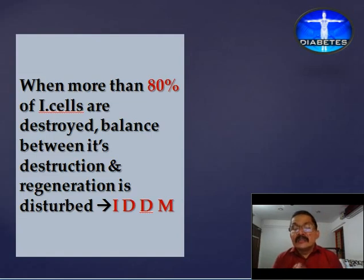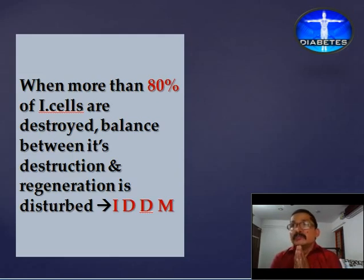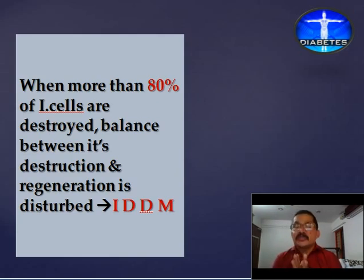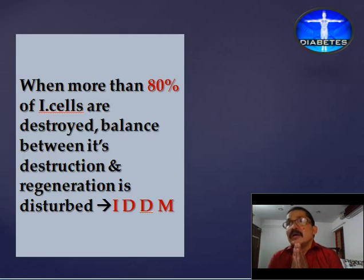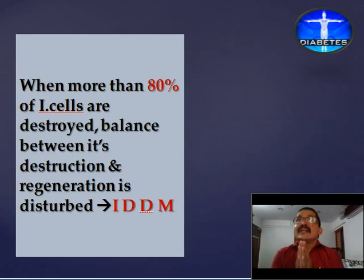In summary, IDDM may present as an autoimmune condition or may be due to unknown viral infections, genetic mutations, or environmental toxins. These lead to overactivation of cytokines, interleukins, interferons, etc., which activate death genes present in the beta cells of the pancreas, causing their destruction. When the destruction of beta cells exceeds regeneration — reaching more than 80% damage — it results in insulin-dependent diabetes.